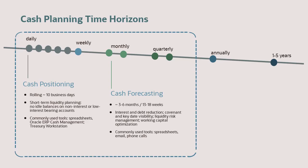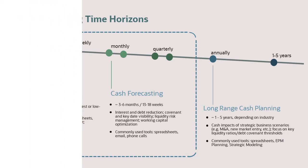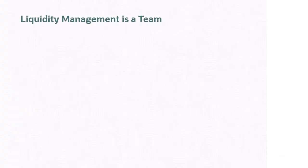Long-range cash planning is done within a 1 to 5-year range. The focus is on strategic business scenarios such as mergers and acquisitions, new markets, liquidity debt ratios, and debt covenants. EPM planning and strategic modeling are used for this. Liquidity management is a team sport.